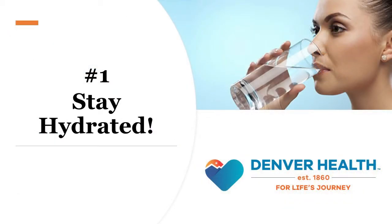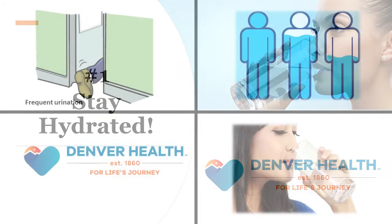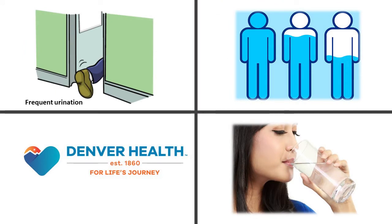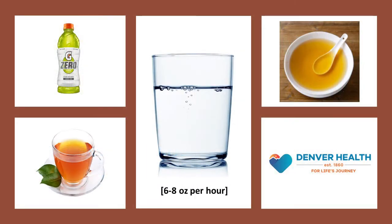1. Stay hydrated. High blood sugars will cause the body to urinate more, which can lead to dehydration. Drinking plenty of fluids when you're sick can help prevent that. To maintain hydration, choose sugar-free fluids like water, tea, or a zero sports drink, unless otherwise directed by your health care provider. Aim for about 6-8 ounces of sugar-free fluids every hour, and every 3 hours you can also drink something salty like a broth.